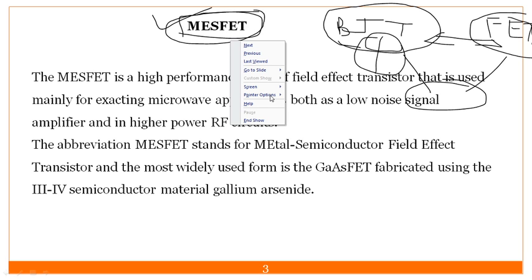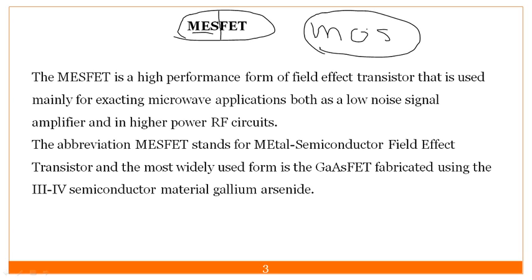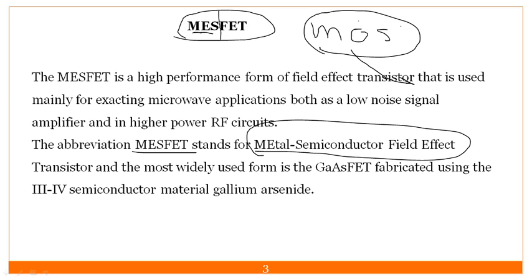We are discussing MESFET. You know the term MOSFET — MOS stands for metal oxide semiconductor. But in MESFET you have MES, which is metal semiconductor, so there is no oxide layer — the insulating layer is totally absent. MESFET stands for metal semiconductor field effect transistor. FET is a voltage-controlled device whereas BJT is a current-controlled device, and BJT has less power handling capacity compared to FET.